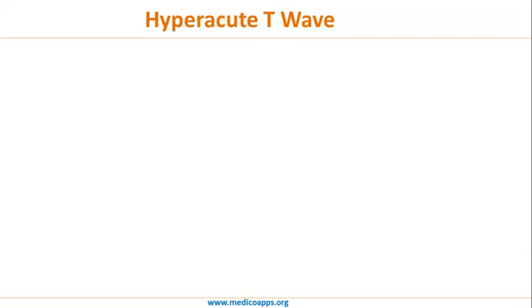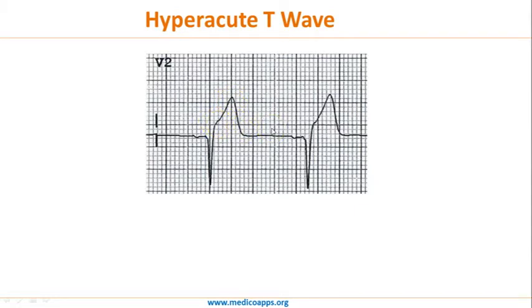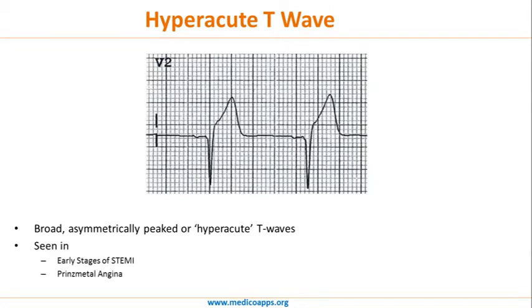Now let's look at hyper acute T waves. The hyper acute T wave is broad — large but not symmetrical and broad, as compared to the peaked T wave which was very tall and narrow. This broad, asymmetrical T wave is called the hyper acute T wave and is seen in the very early stages of ST elevation myocardial infarction. It is also seen in variant angina.